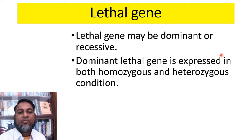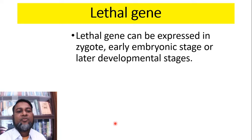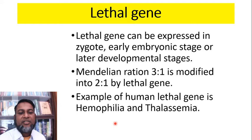Dominant lethal genes are expressed in both homozygous and heterozygous conditions. Recessive lethal genes can be expressed in homozygous condition only. Lethal genes can be expressed in the zygote, early embryogenic stage, or later developmental stages. The Mendelian ratio of 3 to 1 is modified into 2 to 1 by lethal genes. Examples of human lethal genes are hemophilia and thalassemia.